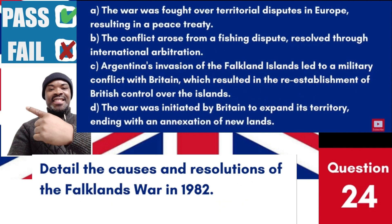Question 24: Detail the causes and resolutions of the Falklands War in 1982. a. The war was fought over territorial disputes in Europe, resulting in a peace treaty. b. The conflict arose from a fishing dispute, resolved through international arbitration. c. Argentina's invasion of the Falkland Islands led to a military conflict with Britain, which resulted in the re-establishment of British control over the islands. d. The war was initiated by Britain to expand its territory, ending with an annexation of new lands. Answer: c. Argentina's invasion of the Falkland Islands led to a military conflict with Britain, which resulted in the re-establishment of British control over the islands. Argentina's war began with Argentina's invasion, and the conflict ended with Britain successfully re-asserting its sovereignty over the islands. Thank you.